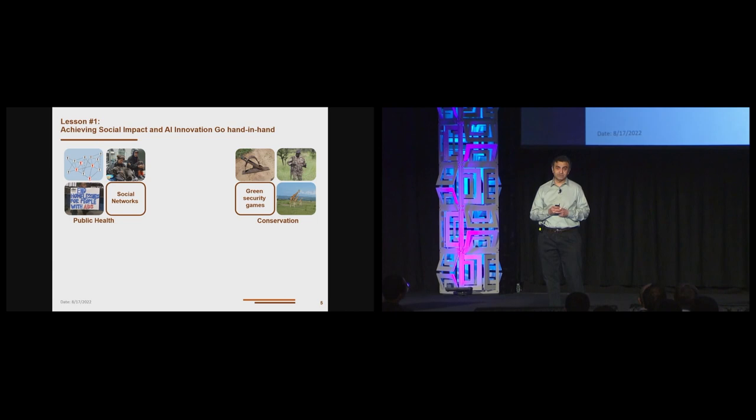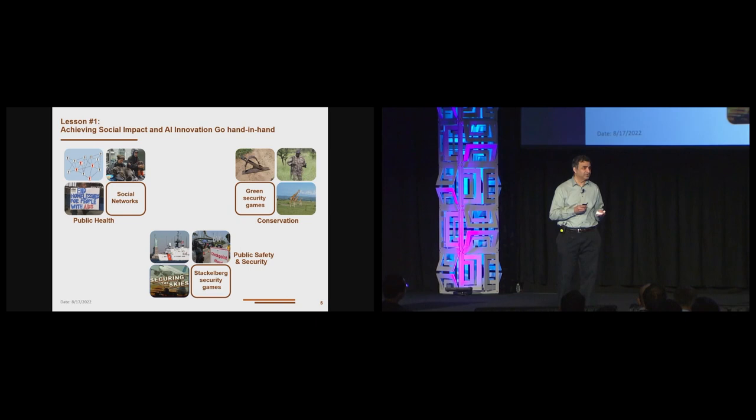With respect to conservation, we have large conservation areas to protect but limited number of ranger resources. A concrete example is work we have done in Uganda and Cambodia where harnessing past poaching data, we are able to predict where poachers set traps or snares and for the past several years have been able to remove thousands if not tens of thousands of these snares. This work required innovation in the area of what we call green security games which combines machine learning and game theory.